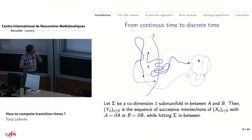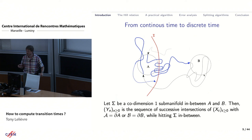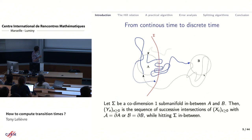The first step will be to introduce some codimension-one manifold sigma, determined as a level set of some function from R^n to R — think of a distance to A, for example. This will be a circle around A. What you do is say that when the process enters A, it goes to sigma at some point, and once on sigma, it goes either back to A or to B.